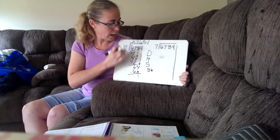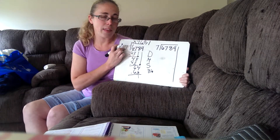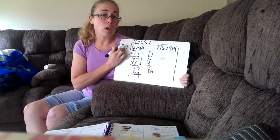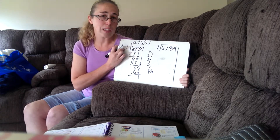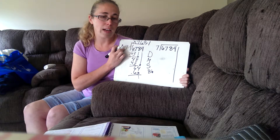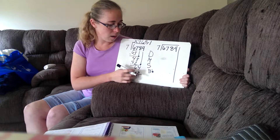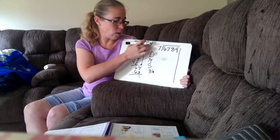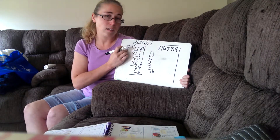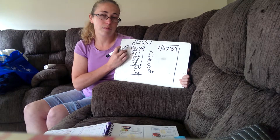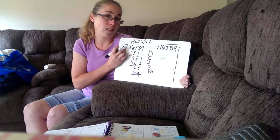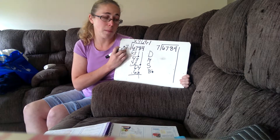Now, if your remainder is bigger than the divisor, you know that you did something a little bit wrong. You need to go back and divide one number bigger because the remainder can't be bigger than the divisor. Otherwise, you just need to work your problem again.